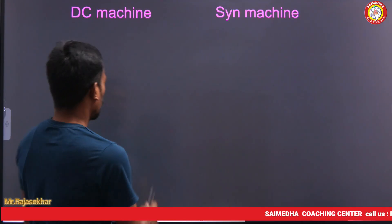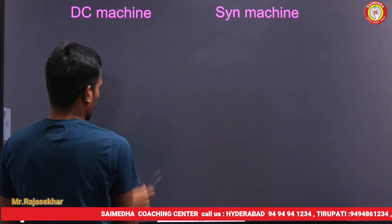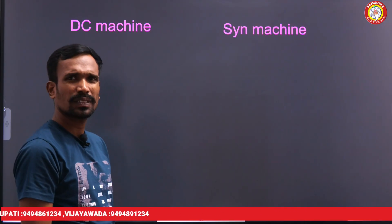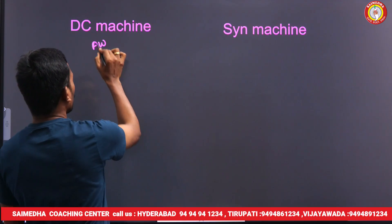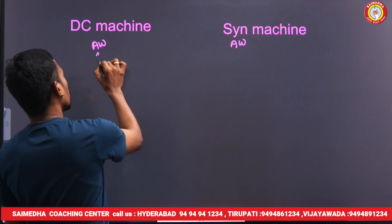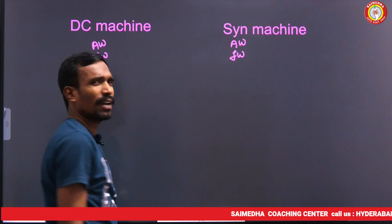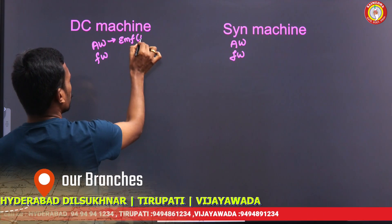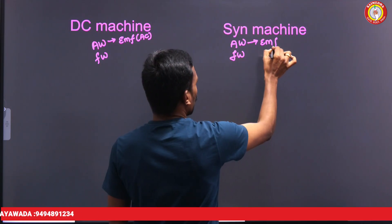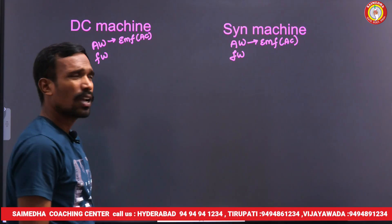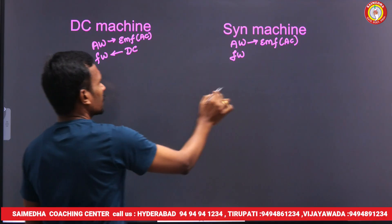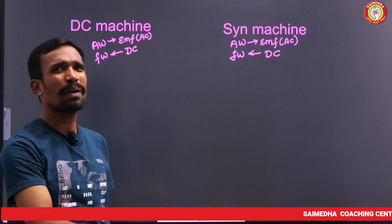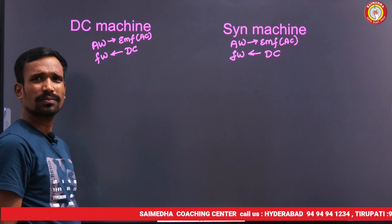What are the basic differences between a DC machine and a synchronous machine? In both cases, we have armature windings and field windings. The armature winding produces EMF, which is AC EMF. The field winding creates a magnetic field and is given DC supply in both cases, creating a stationary magnetic field.